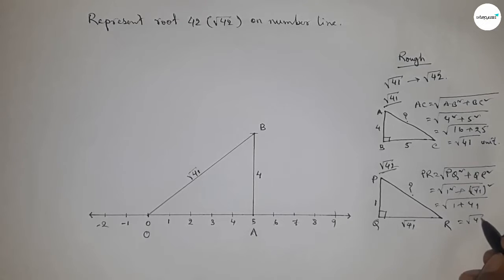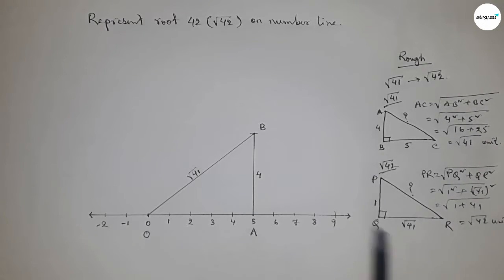So this is 1 square plus root 41 whole square, so this is root over 1 plus 41, so this is root 42 unit.